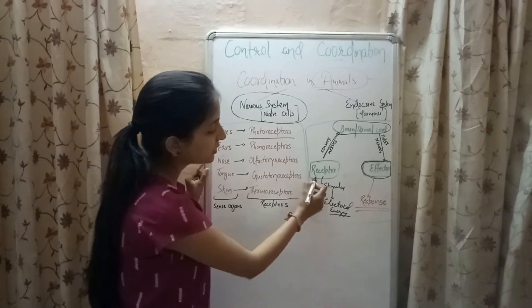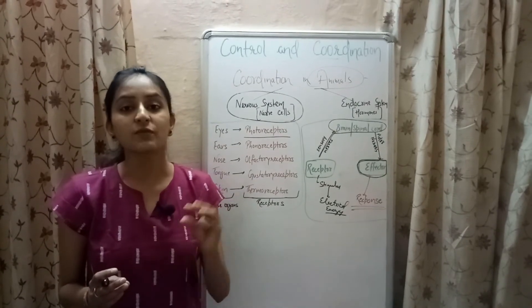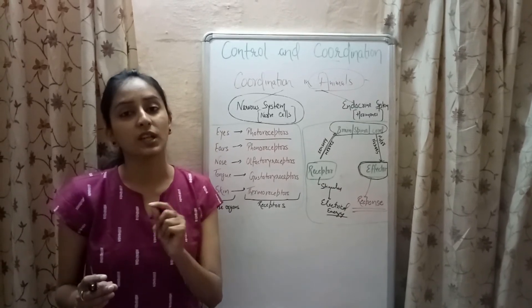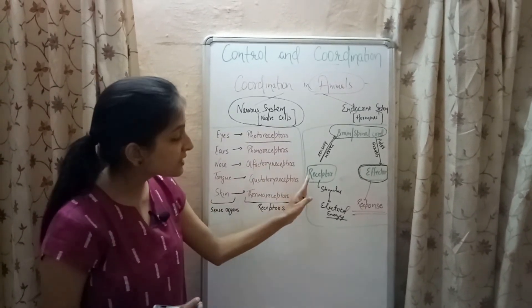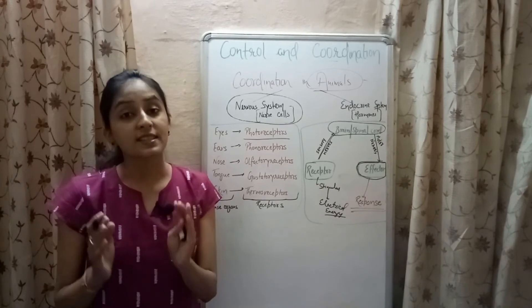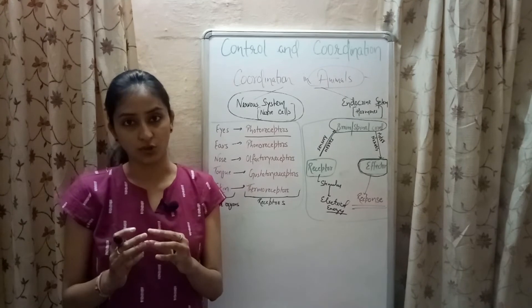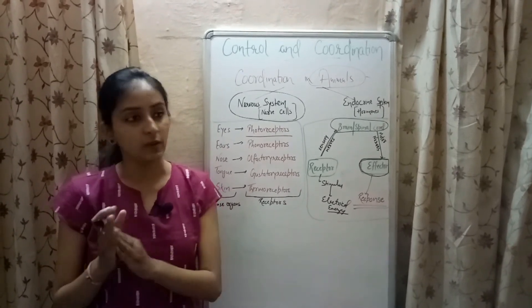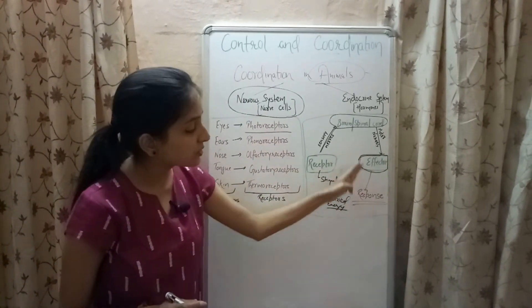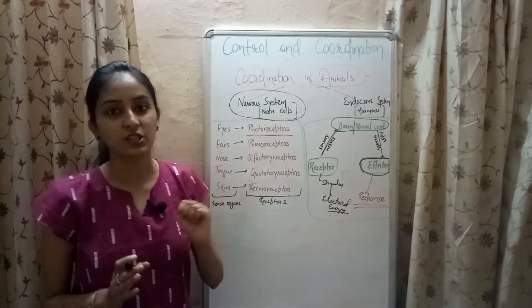To summarize: receptors sense the stimulus and convert its energy into a nerve impulse. The nerve impulse travels via sensory nerves to the brain or spinal cord, where a proper response is created. This response, again as a nerve impulse, is transported via motor nerves to effectors, which produce the systematic response to the stimulus.